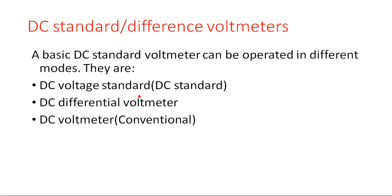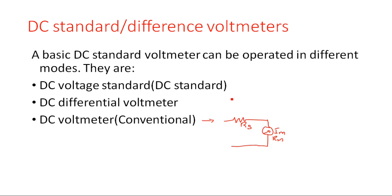DC voltmeter conventional is a more general voltmeter — a single series resistor followed by a meter. The meter has internal resistance RM and current IM. We no need to explain this concept again because we have already seen this. In this lecture we are going to focus on the DC voltage standard and DC differential voltmeter modes of operation.